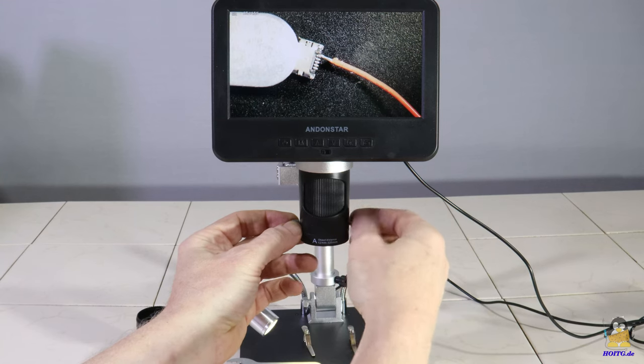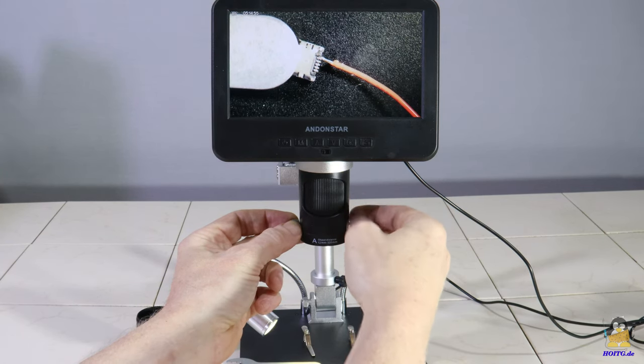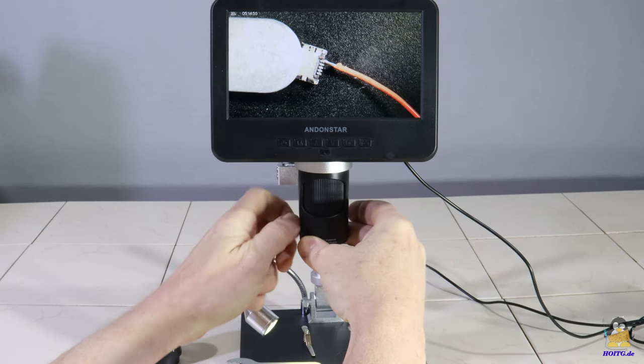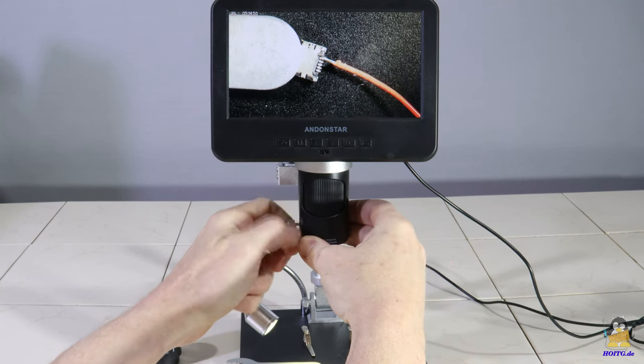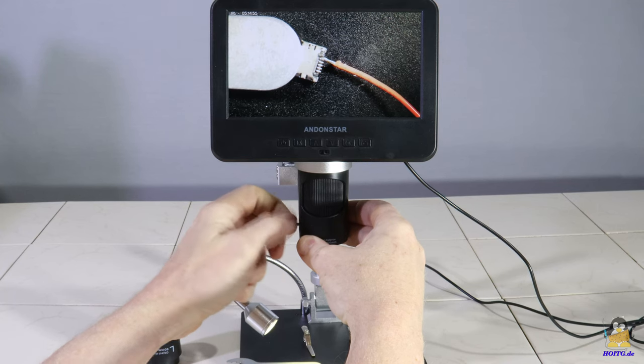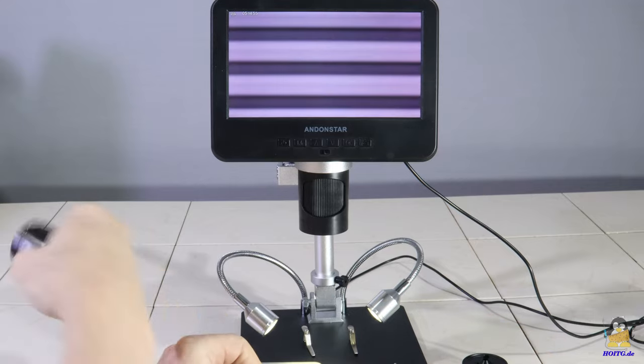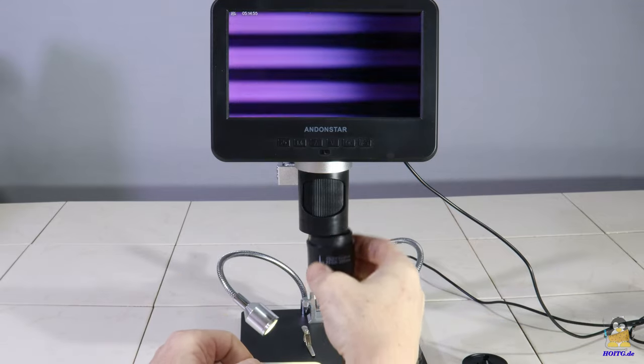Swapping lenses is done by loosening two screws, taking out the first lens without dropping it, and finally screw on lens number 2.